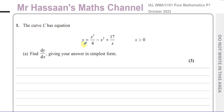The curve C has equation y equals x cubed over 4 minus x squared plus 17 over x, where x is greater than 0. We've got to find dy/dx and give the answer in its simplest form. So that means we have to differentiate this function — we have to differentiate this equation for this curve.